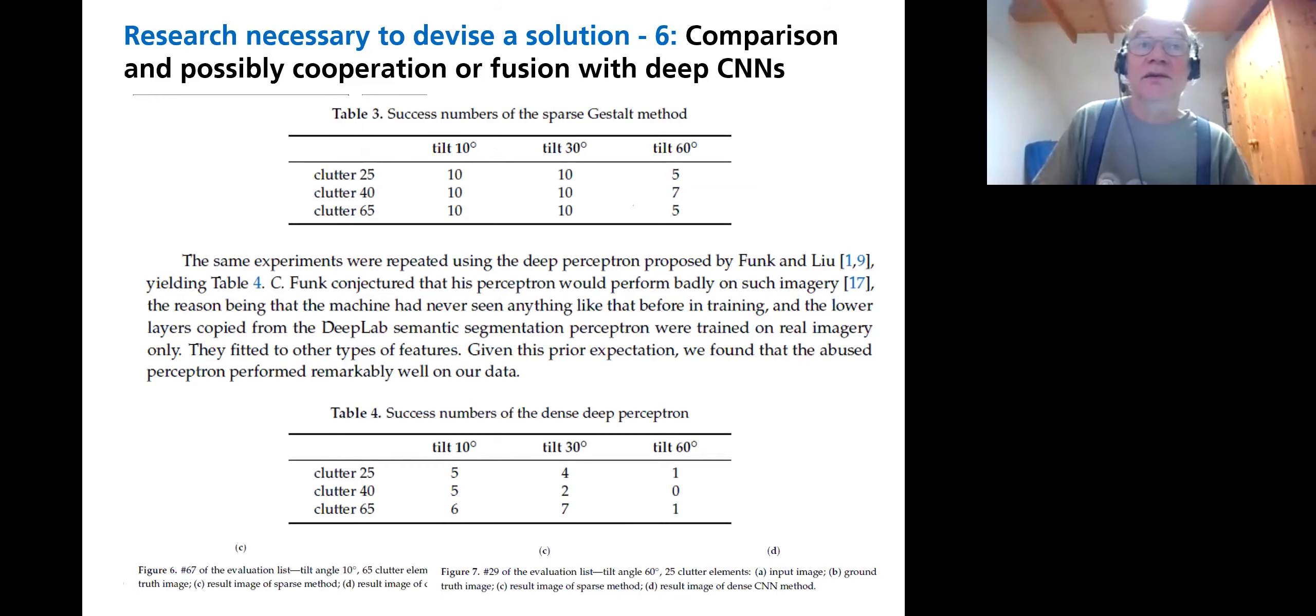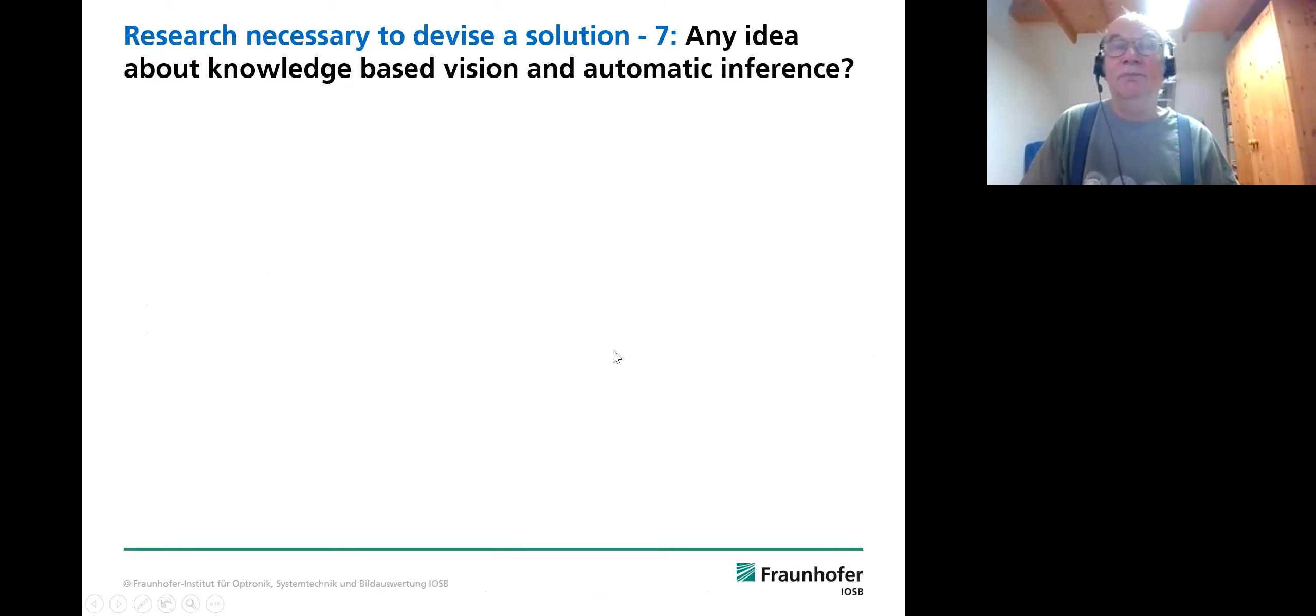And of course, in this publication, our combinatorial is better than the competitor. Like it is always, these tables at the end of the paper look the same. And then apart from gestalt recognition, there is automatic inference, knowledge-based vision, which were hot topics 20 years ago. I'm out of it. Frankly speaking, I don't know. I would start reading Heinrich Niemann and Gerhard Sagerer.